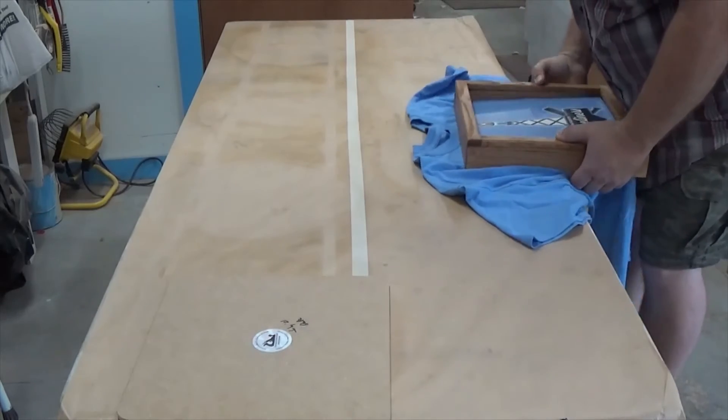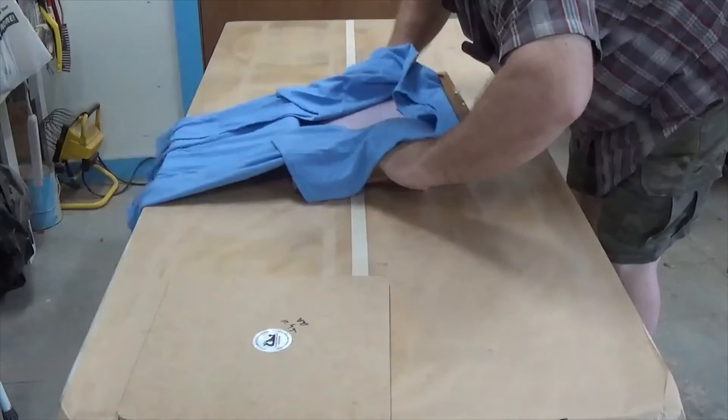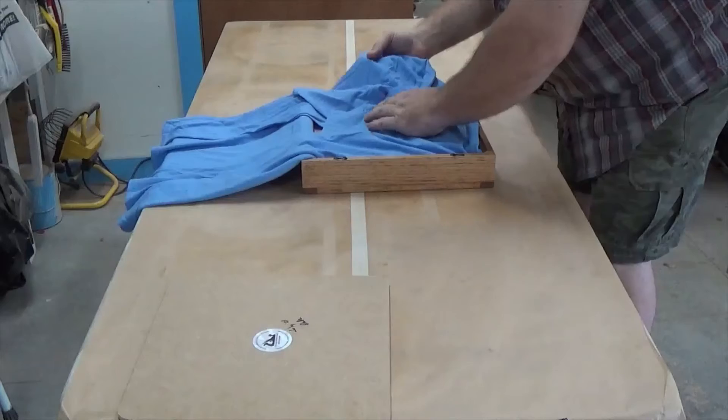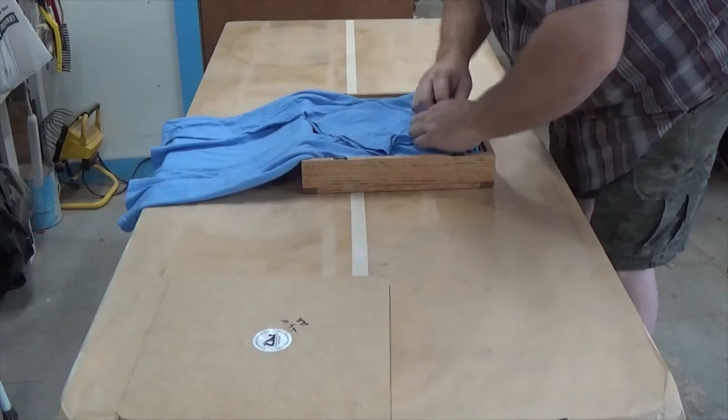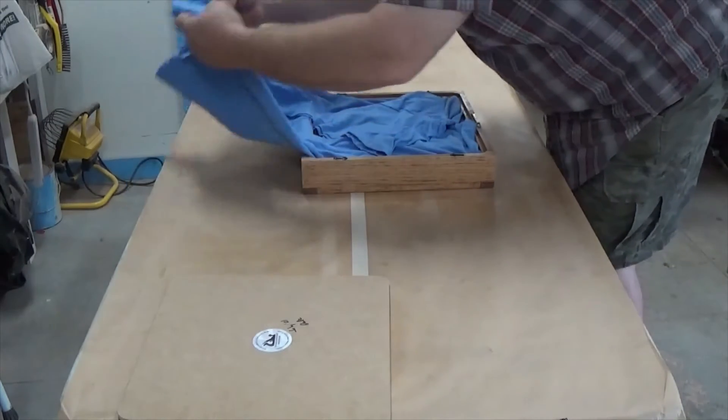Slide it off of the table. Flip upside down. Fold the rest of the shirt in the cavity that's on the back.